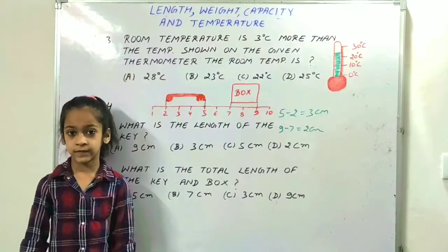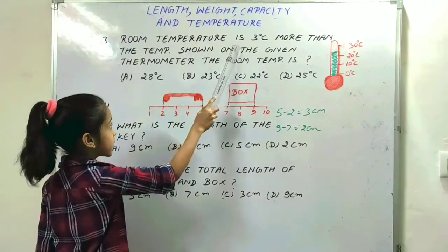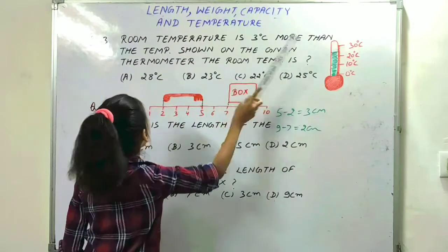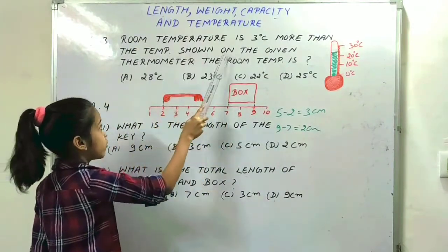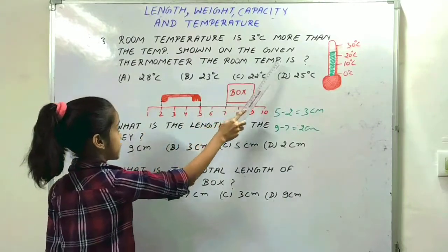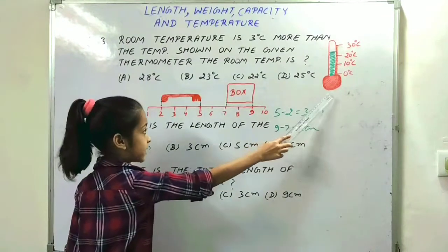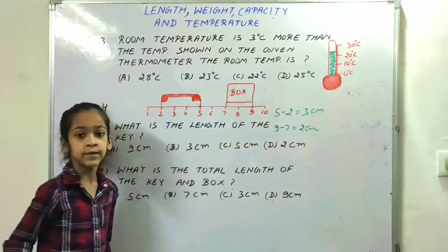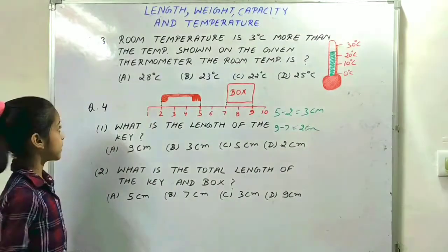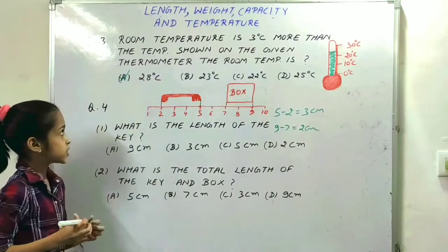The next question is: room temperature is 3 degrees more than the temperature shown on the given thermometer. The room temperature is... Here on the thermometer, the temperature is shown 25 degrees. So 25 plus 3 is equal to 28. Option A is the right option.